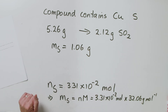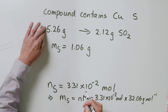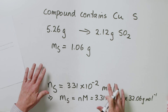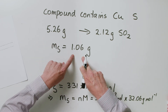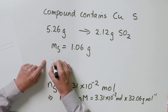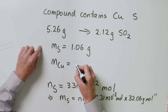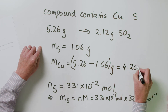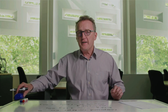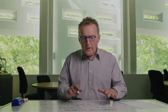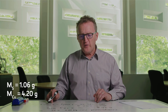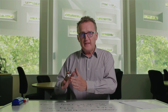We're nearly there. We know our starting mass was 5.26 grams, made up solely of copper and sulfur. Through this analysis we've shown that 1.06 grams of it was sulfur. So the mass of copper must equal the difference: 5.26 − 1.06 = 4.20 grams of copper. We now have a straightforward empirical formula calculation. We've got a mass of sulfur and a mass of copper, so we can work out the number of moles of both, which will lead us to the empirical formula.